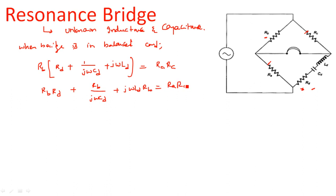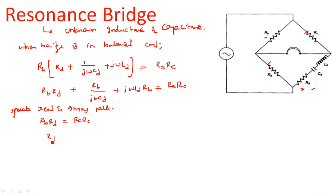Now equate the real and imaginary parts. Equating the real parts: RB × RD = RA × RC, so the unknown resistance value RD = RA × RC / RB.